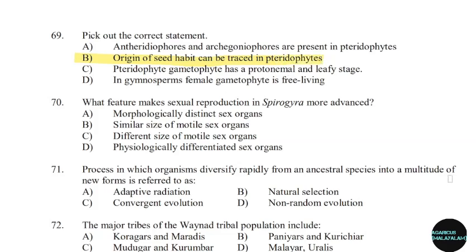70th question: What feature makes sexual reproduction in Spirogyra more advanced? Correct answer: Option D — Physiologically differentiated sex organs.